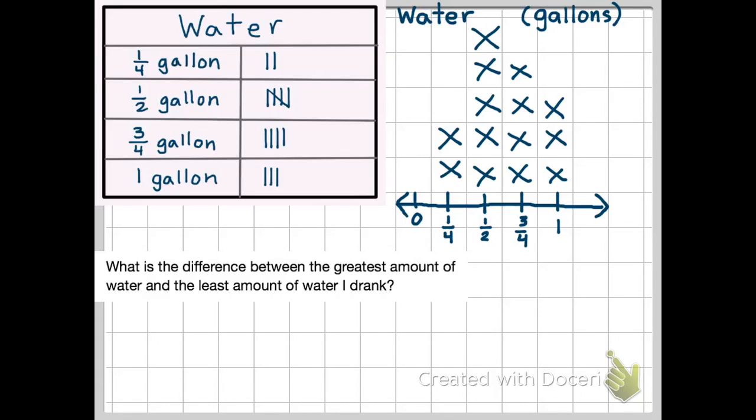So the greatest was one gallon, and the least I drank was one-fourth. Even though we have zero on our graph, there was never a day where I drank no water, or zero gallons of water. So we're going to take our one whole, and we're going to change that into four-fourths. Then we're going to subtract the least, which was one-fourth, and this is going to give us our answer.